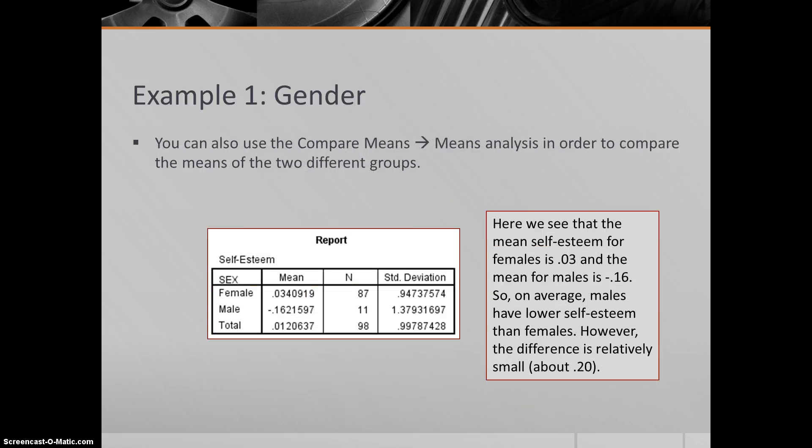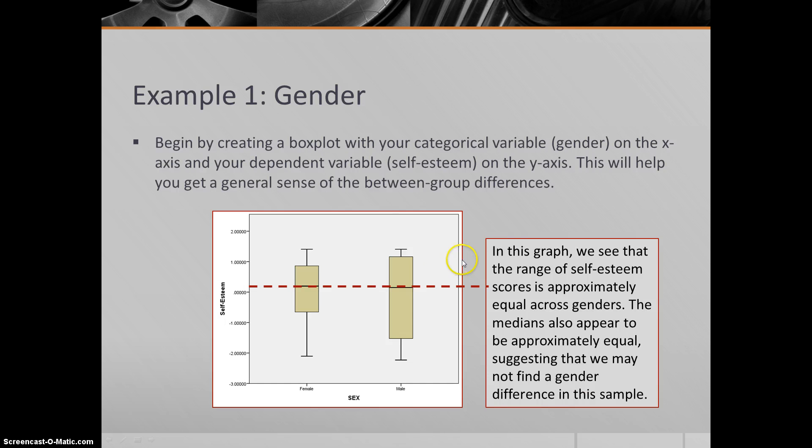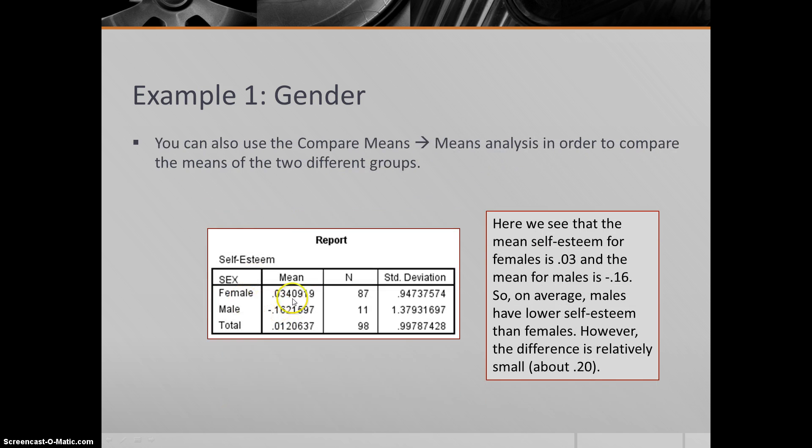What else can we do? Let's use the compare means analysis to compare the means of the two different groups. Actually look at them. The mean for females is 0.03, for males is negative 0.16. You can kind of see how the males are slightly below this line, the females are slightly above. There's a very slight observed difference between males and females. But look at the standard deviations - they're around 1, if not slightly over. So this is about 0.2 standard deviations. It's a relatively small difference. It probably wouldn't have any practical significance.